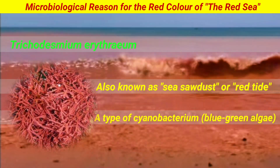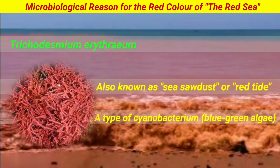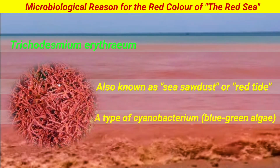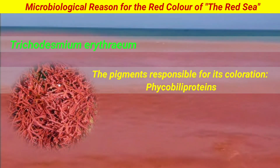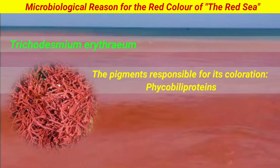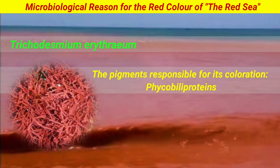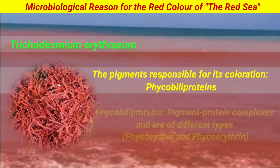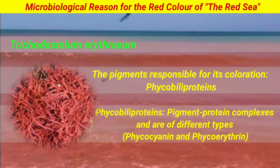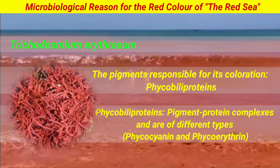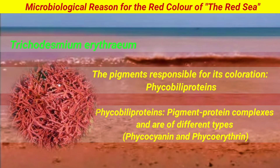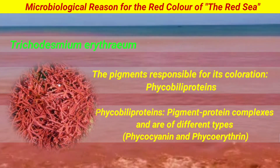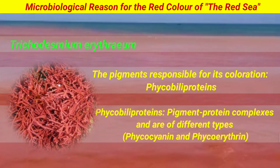It is a type of cyanobacterium, also known as blue-green algae. The pigments responsible for the coloration of Trichodesmium erythraeum are phycobiliproteins. Phycobiliproteins are specialized pigment-protein complexes and are categorized into different types, based on their coloration.